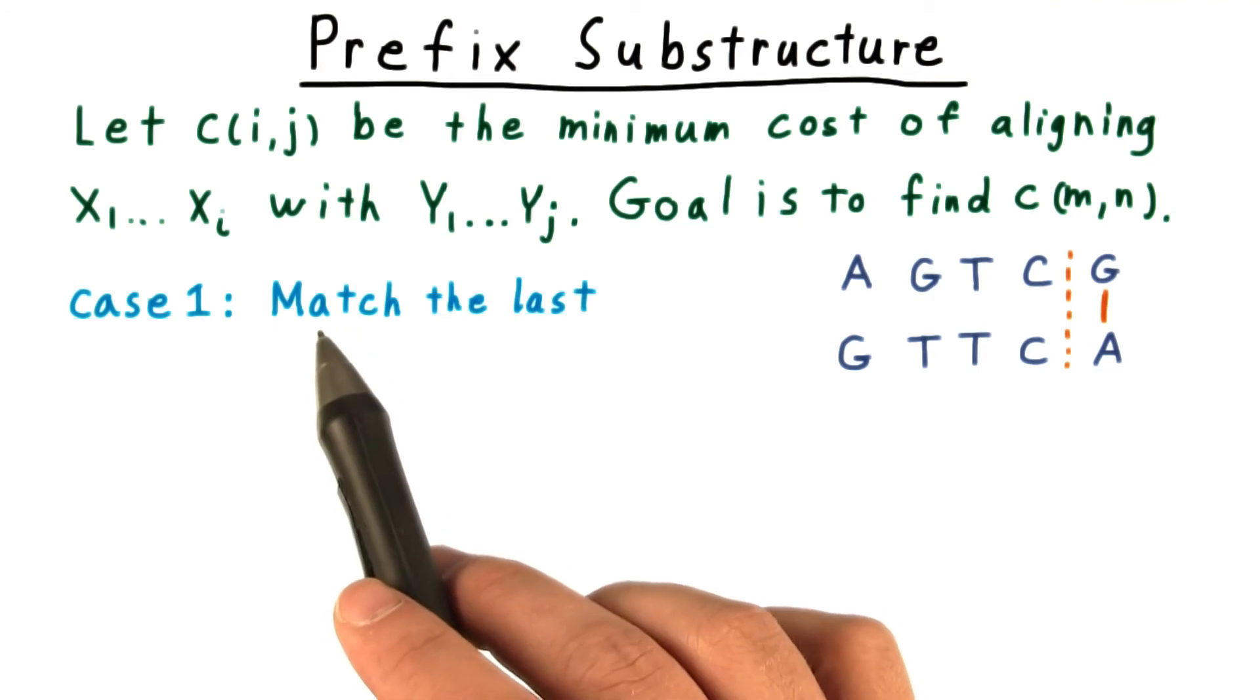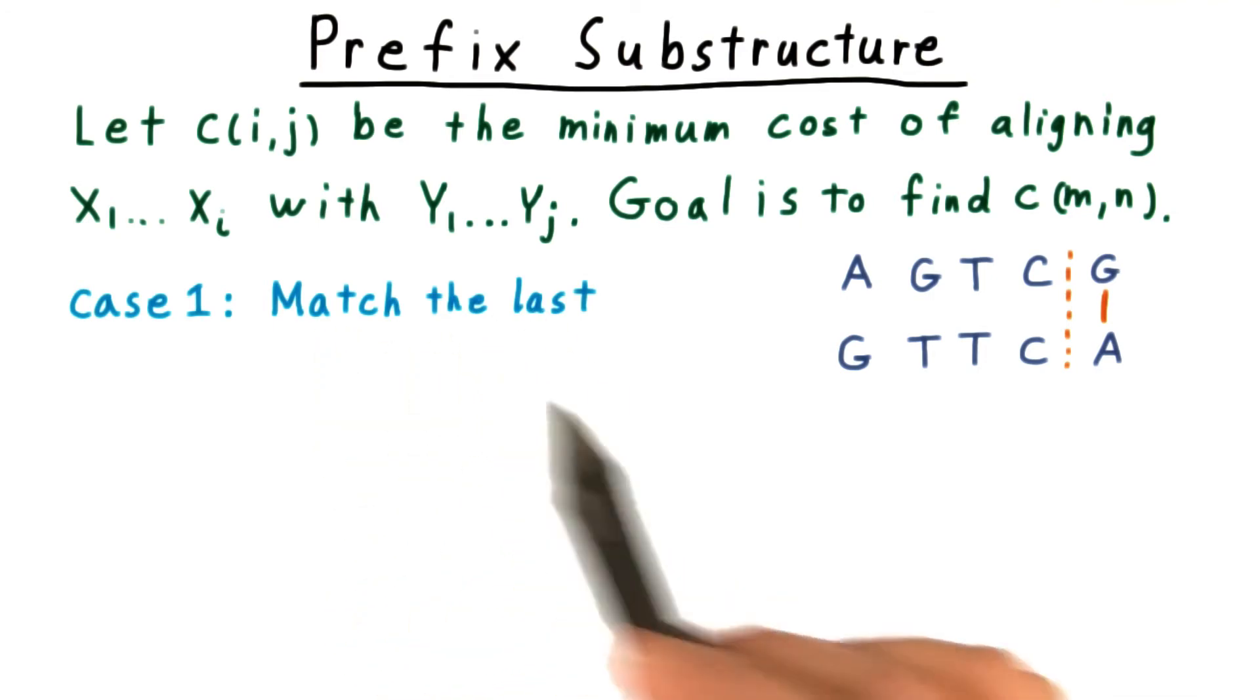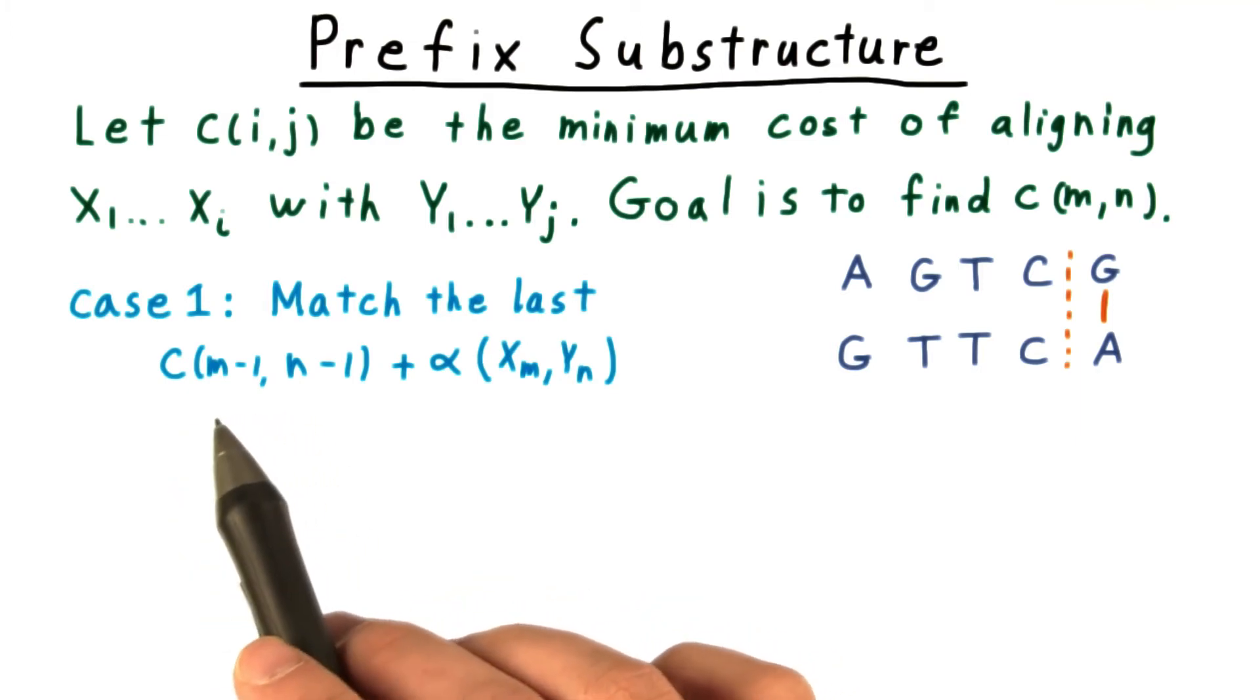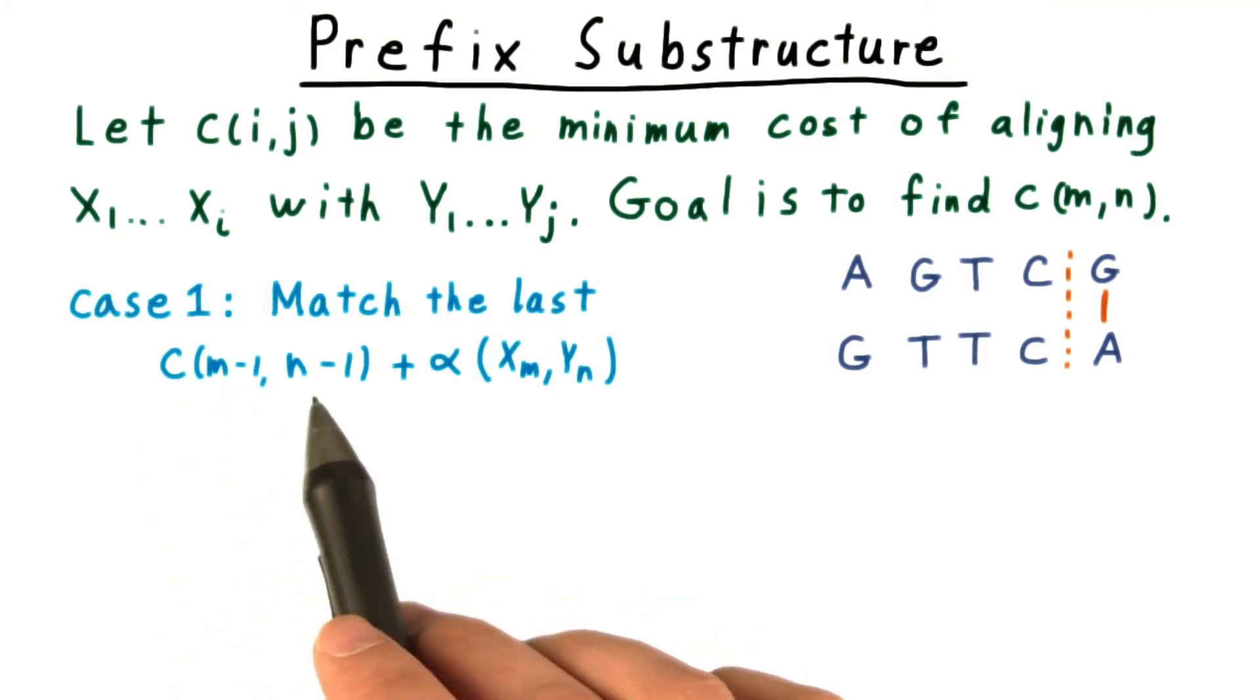First, suppose that we match the last two characters of the sequences together, like so. Then the cost would be the minimum cost of aligning the first m minus 1 characters of x with the first n minus 1 characters of y, plus the cost associated with matching these two characters.